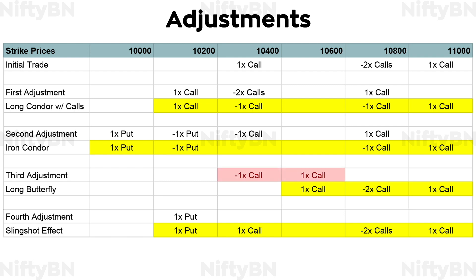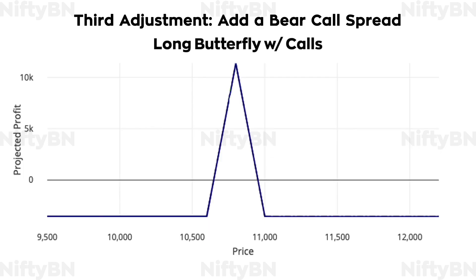The third adjustment would be to add a bear call spread to the tested side, with the lower strike of the original broken wing butterfly spread as the lower strike of the bear call spread. The size of the bear call spread — that is, the distance between the strikes — should be the same as the distance between the middle strike and higher strike of the original broken wing butterfly spread. That is: sell one lot of 30th July 10,400 strike price call; buy one lot of 30th July 10,600 strike price call. This would leave us with a long butterfly spread kind of setup. The said adjustment would reduce the risk. Do this only if you anticipate the price to recover and close in between the long strikes at expiration.